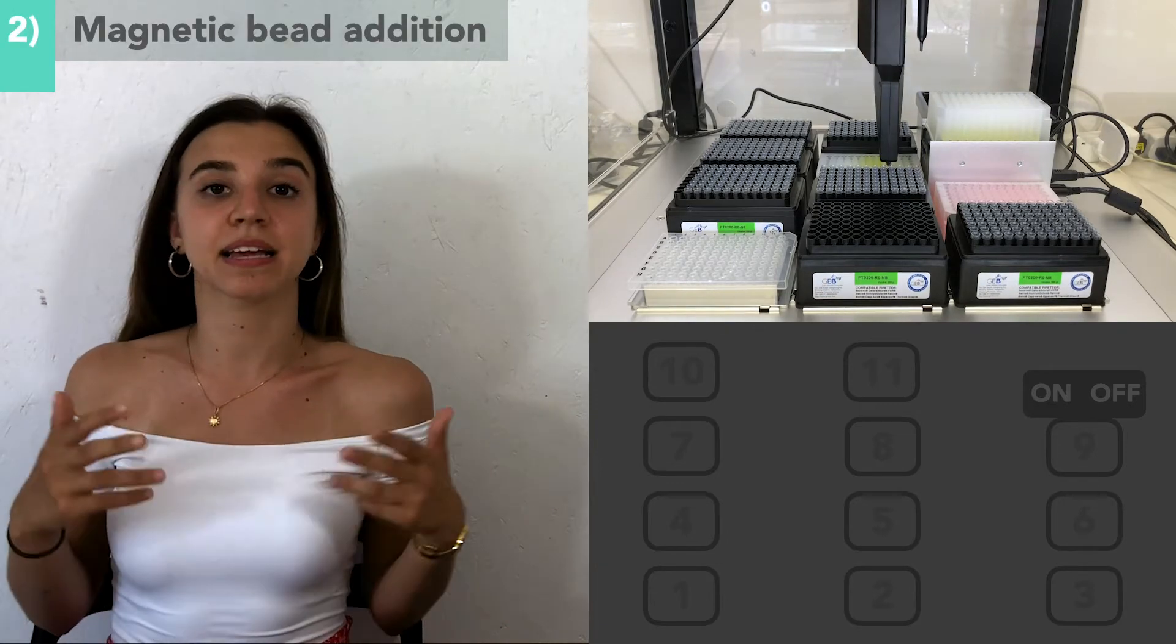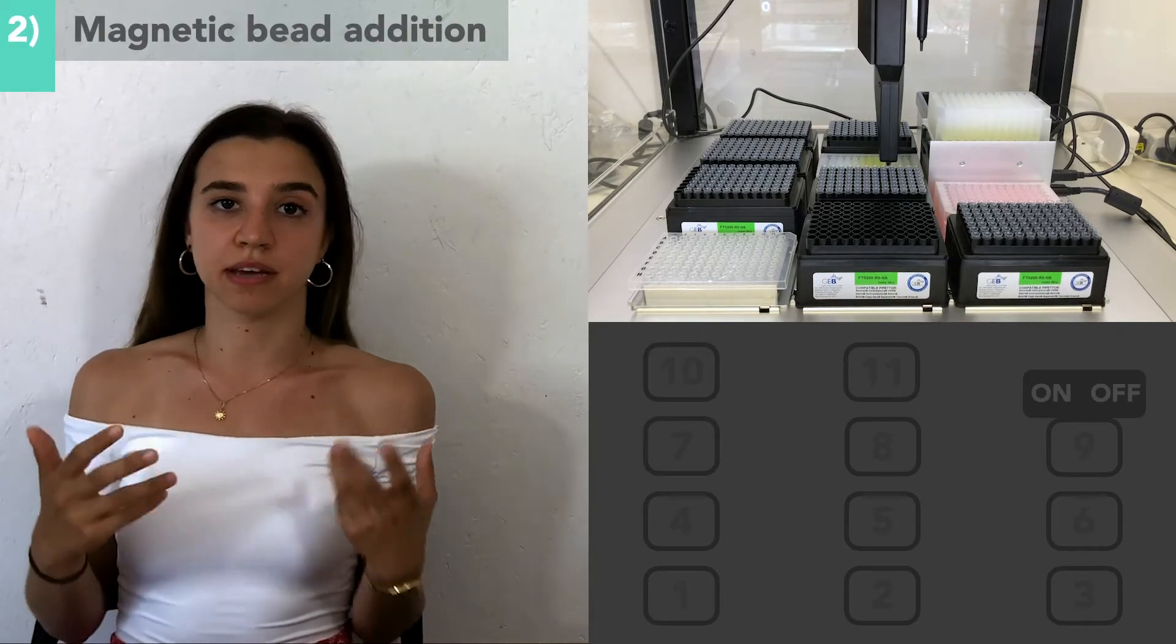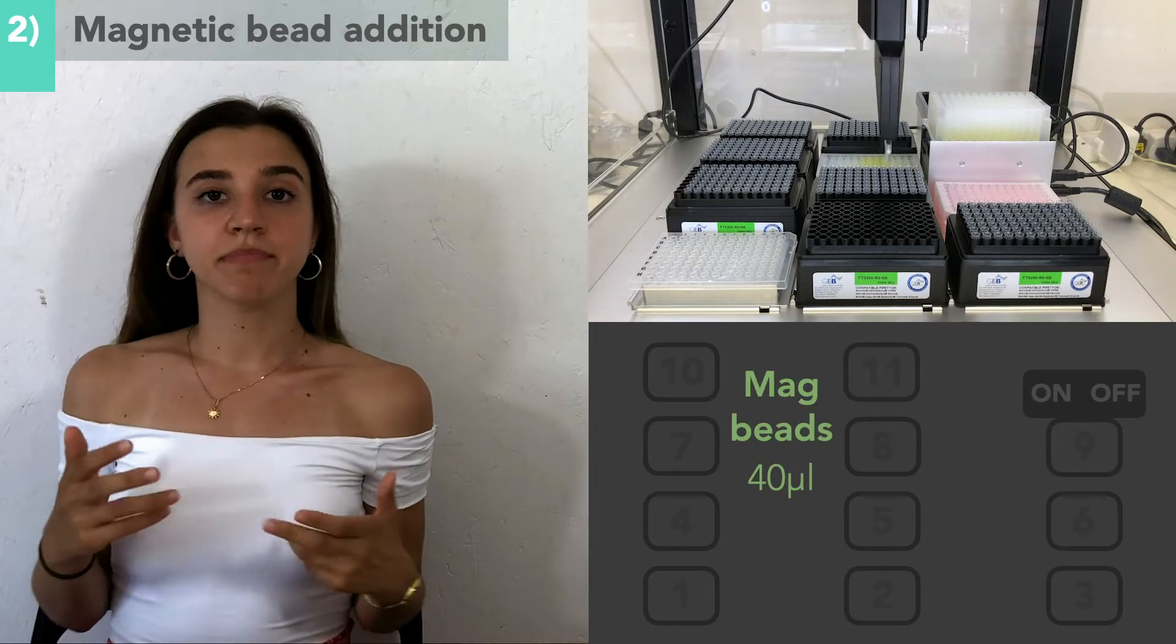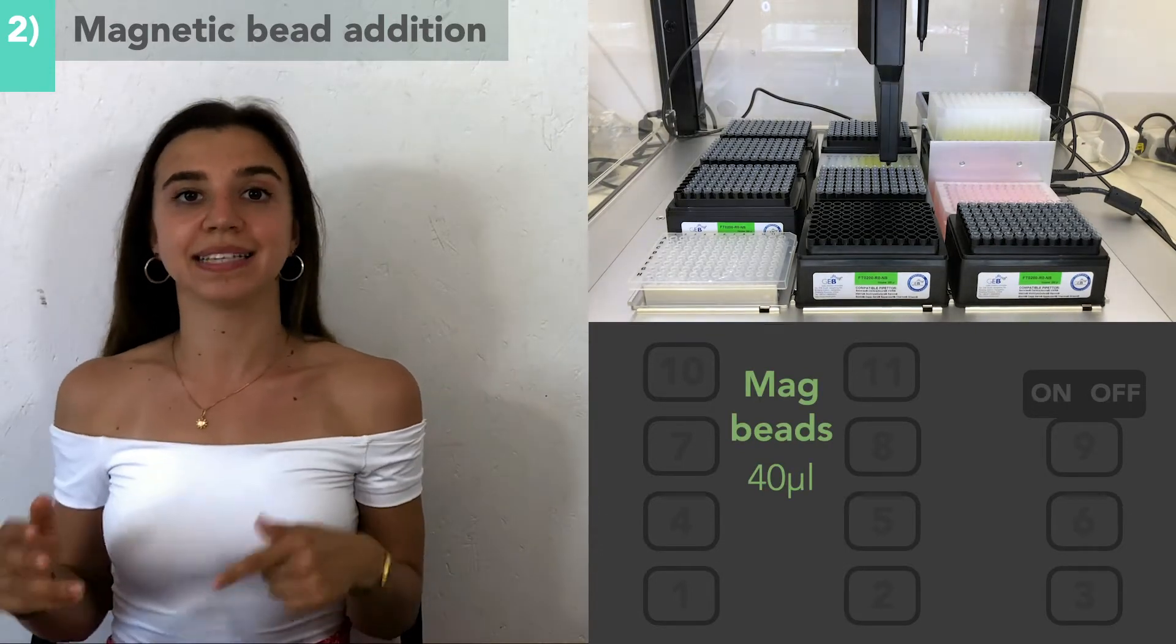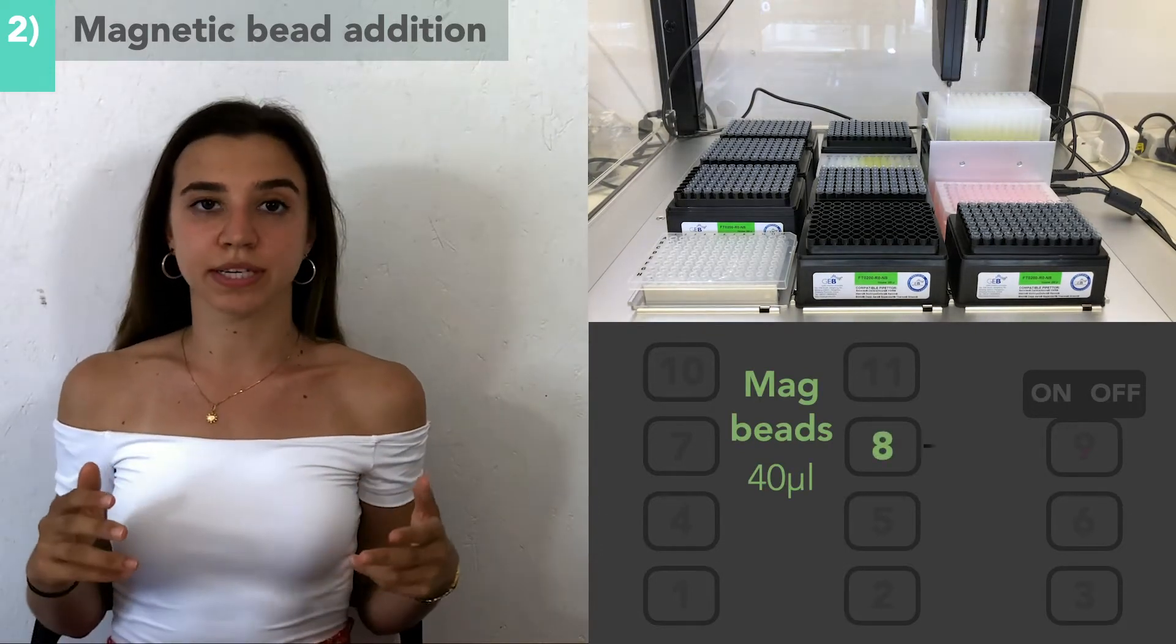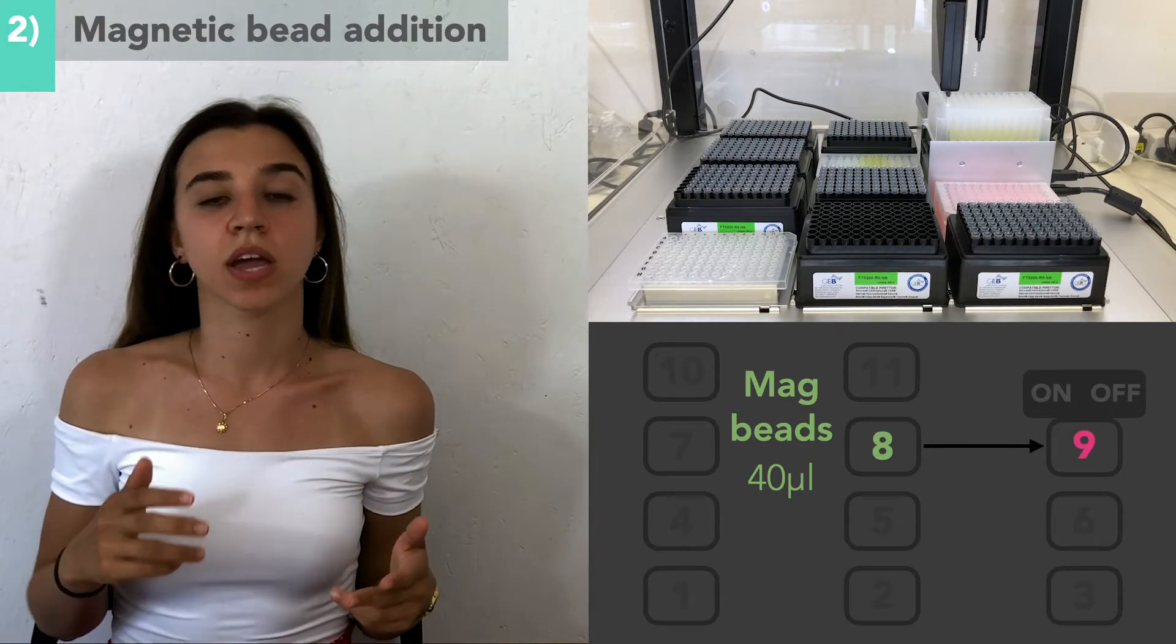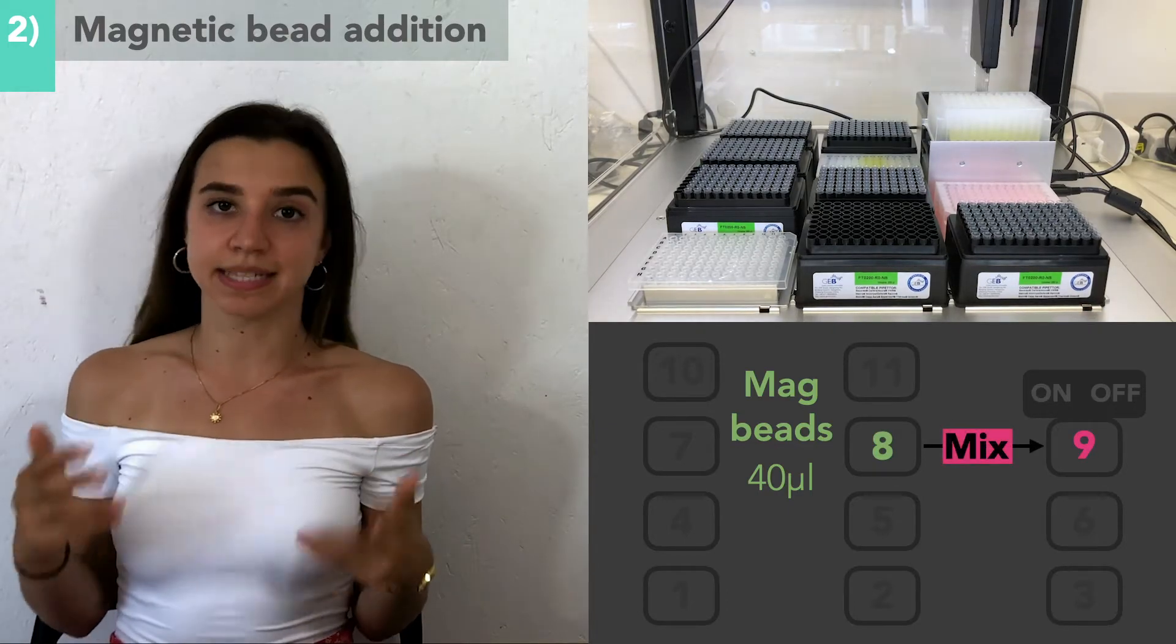After all the sample wells have been mixed with isopropanol, the silica-coated magnetic beads will now be added to the sample plate. 40 microliters of magnetic beads from column 9 in slot 8 will be deposited to each sample well. Once again, this is mixed by pipetting up and down.